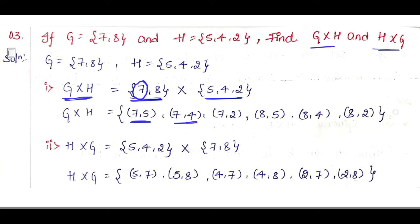Next, you take the second element of G and pair it with all elements of H. That gives ordered pairs (8, 5), (8, 4), and (8, 2). So since set G has 2 elements and set H has 3 elements, G cross H has 6 elements in total.